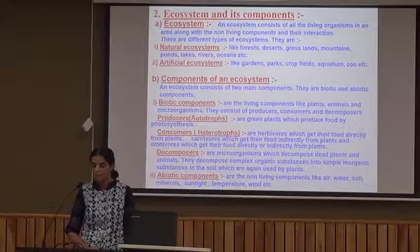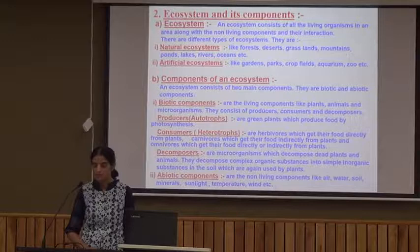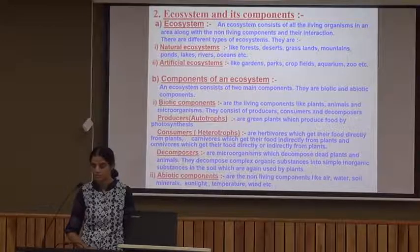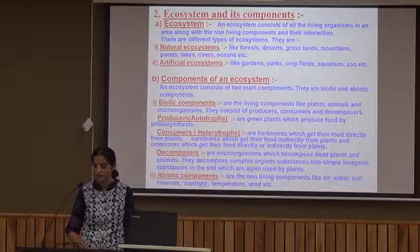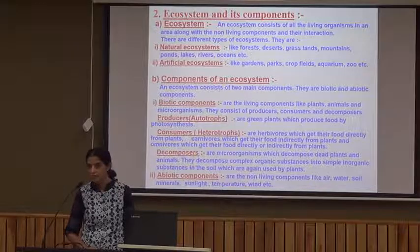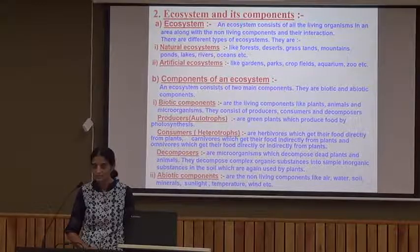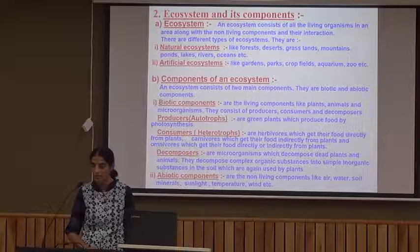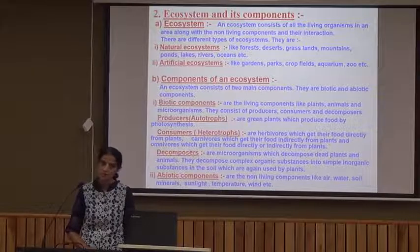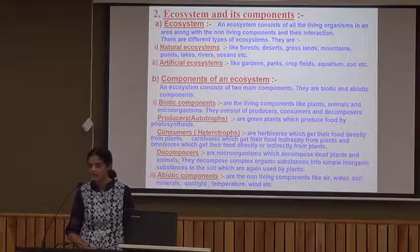Components of ecosystem: there are two major components present in an ecosystem — biotic and abiotic. Biotic components include the living components like plants, animals, and microorganisms. They consist of producers, consumers, and decomposers.